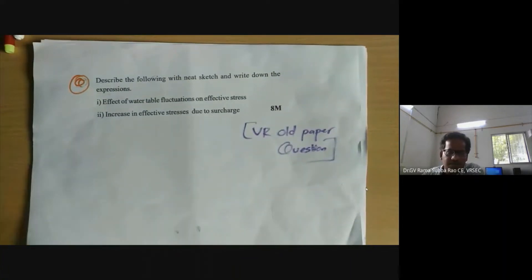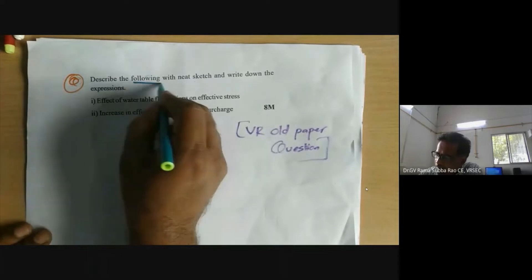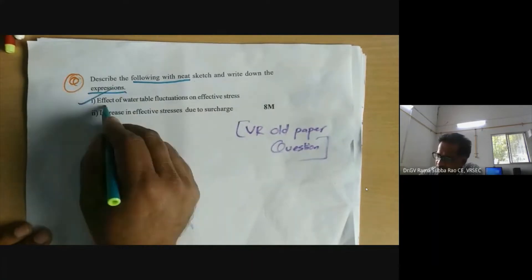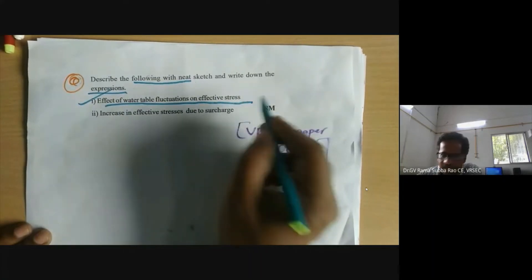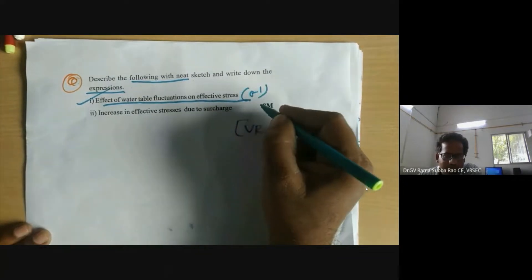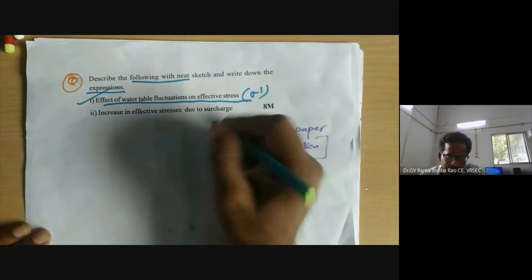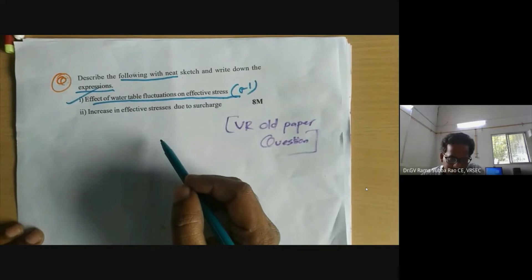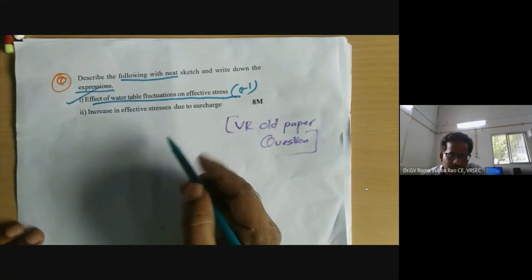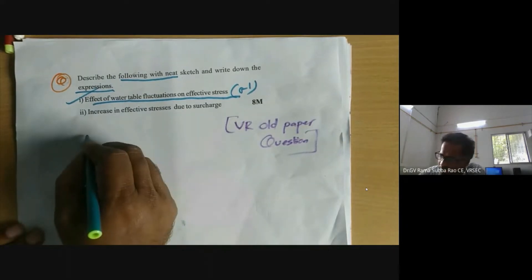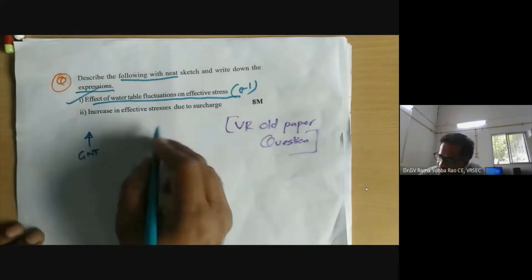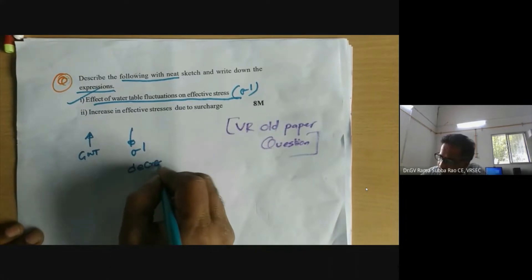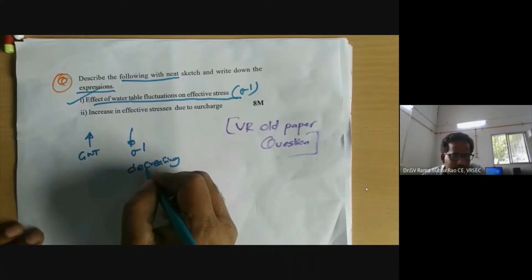Here we have a question: describe the following with a neat sketch and write down the expressions. Let us see what is the effect of water table fluctuation on effective stress — how effective stress is going to vary with water table fluctuation. In the last video we had a discussion about effective stress; as the groundwater table is increasing, the effective stress is decreasing.